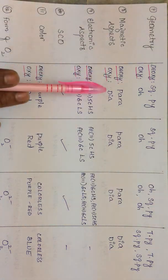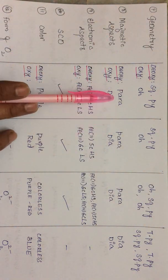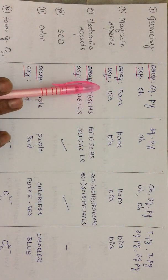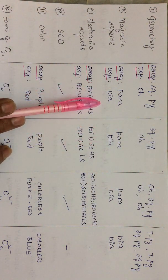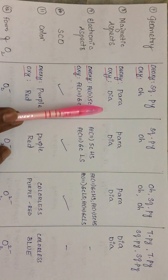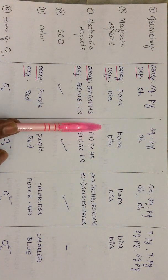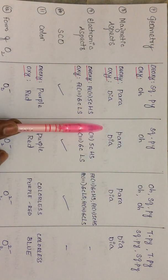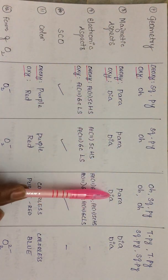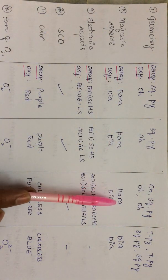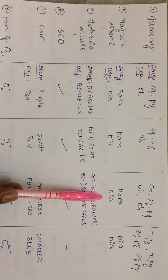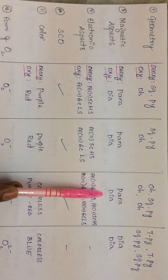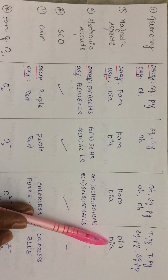Regarding magnetic aspects: hemoglobin and myoglobin are paramagnetic in the deoxy form, but once converted to the oxy form they are diamagnetic. This diamagnetism is explained by antiferromagnetic coupling between the one unpaired electron of iron(III) low spin and the one unpaired electron of the superoxo dioxygen form.